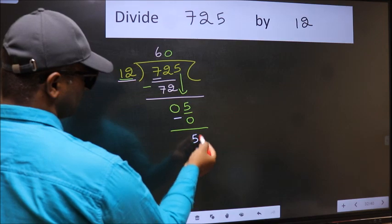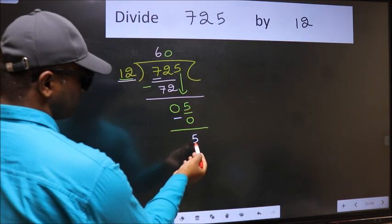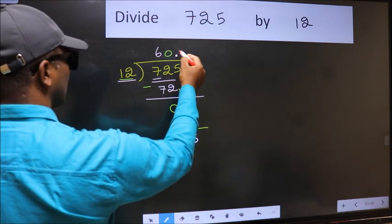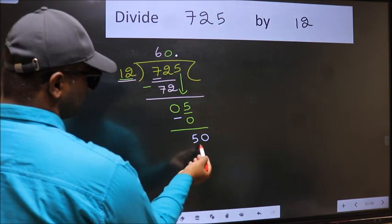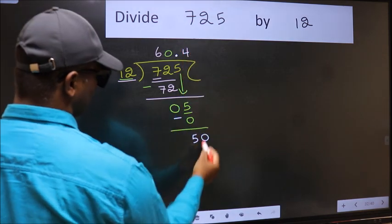Over here, we did not bring any number down. And 5 is smaller than 12. So now you can put dot and take 0. So 50. A number close to 50 in 12 table is 12 times 4, which is 48.